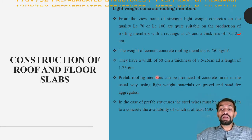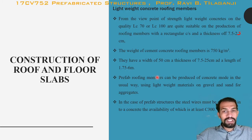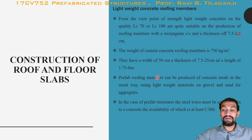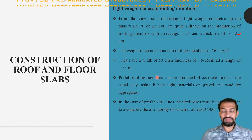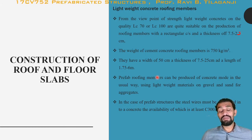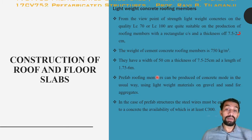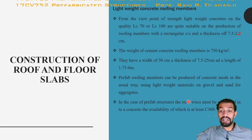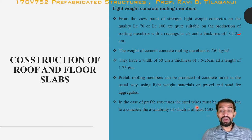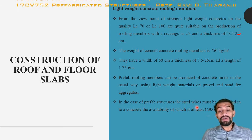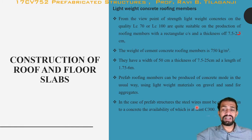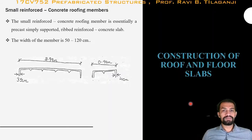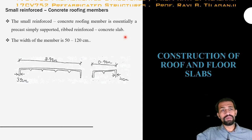Lightweight concrete roofing members have a width of 50 centimeters, thickness of 7.5 to 25 centimeters, and a length of 1.75 meters to 6 meters. They can be produced using conventional concrete molds with lightweight materials such as gravel and sand as aggregates. In prefabricated structures, steel wire reinforcement must be embedded in the concrete with a minimum strength grade of C300.